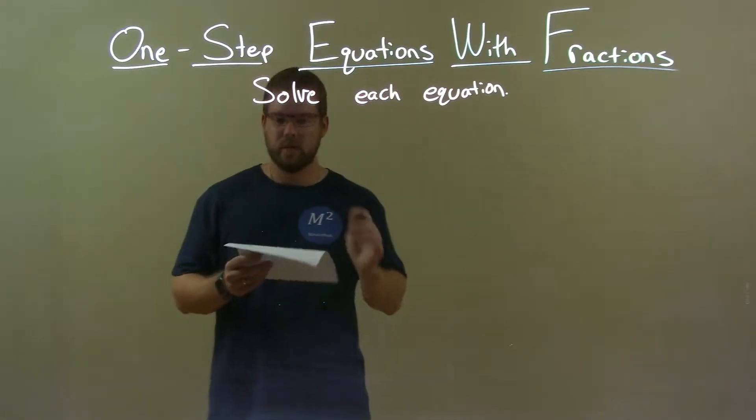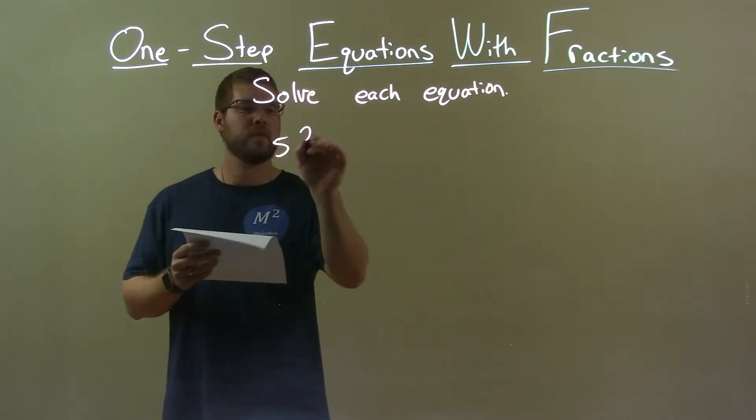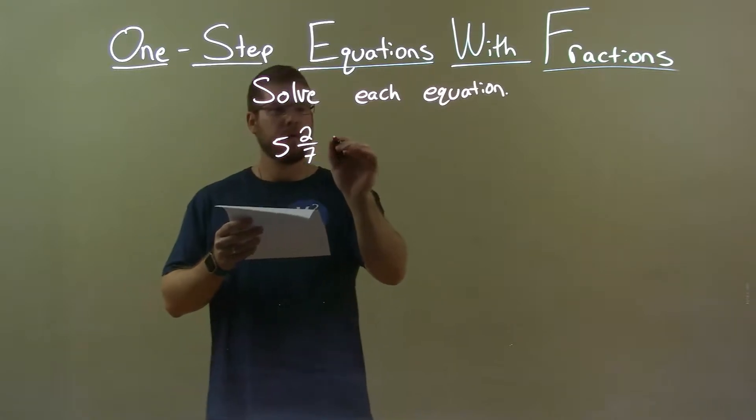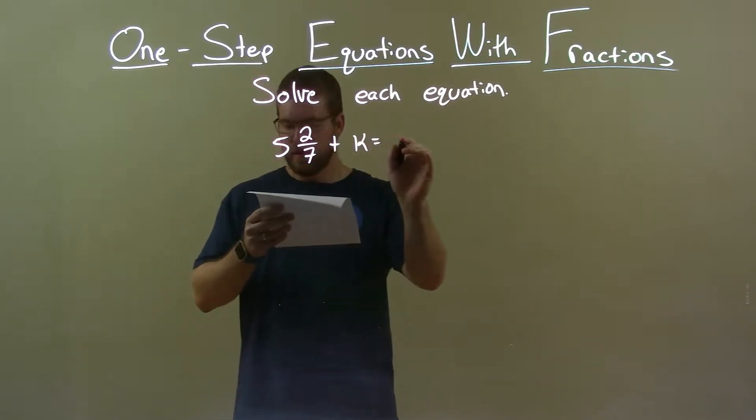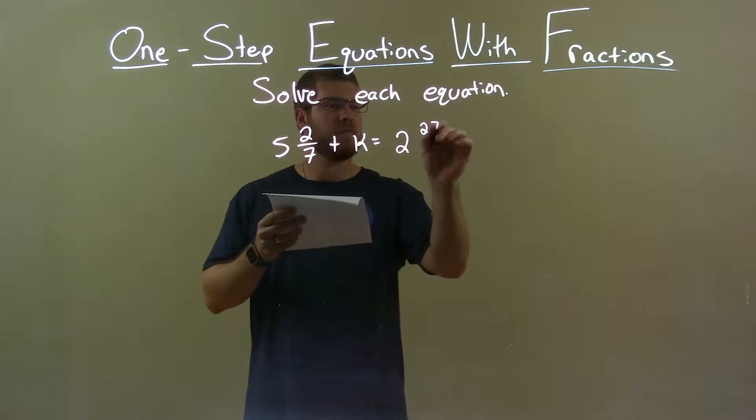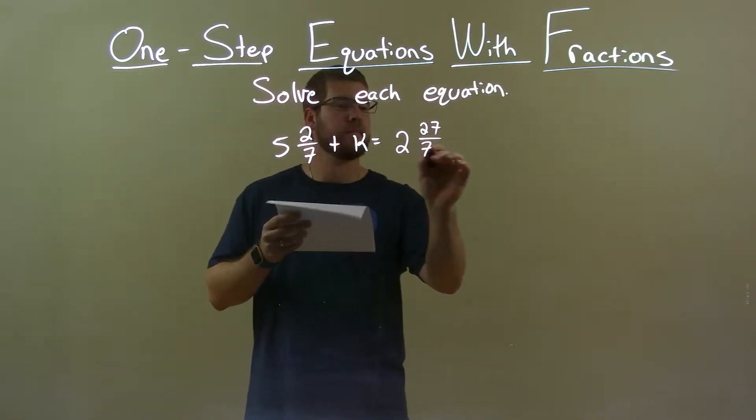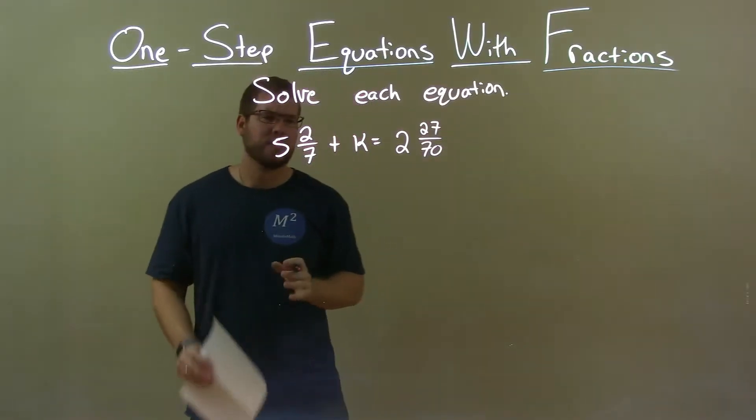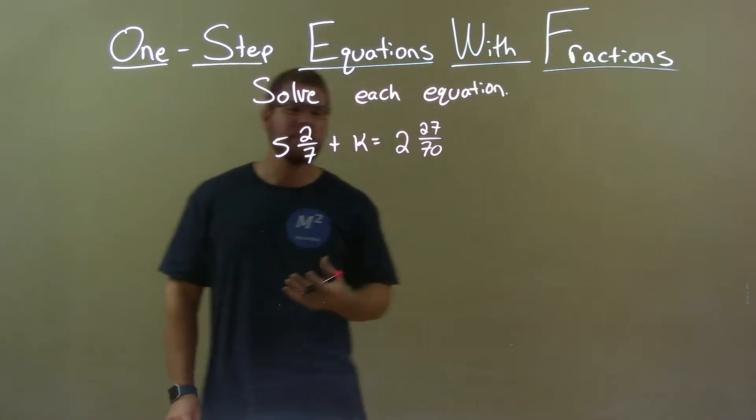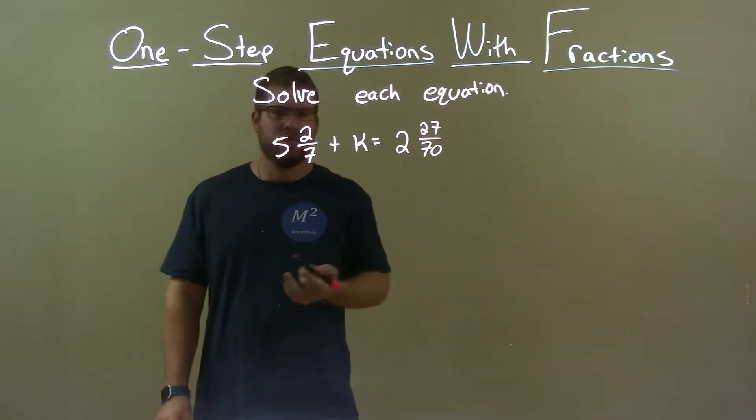If I was given this equation: 5 and 2 over 7 plus k equals 2 and 27 over 70. Well, one of the first things I like to do when I solve this is I know I'm going to have to subtract 5 and 2 7ths from both sides.